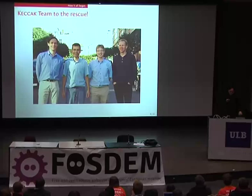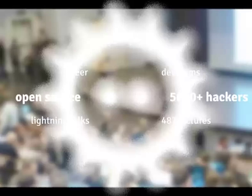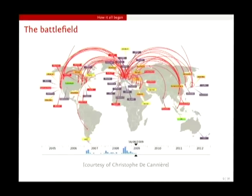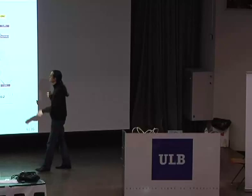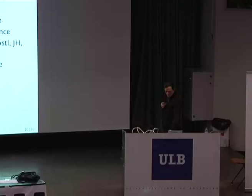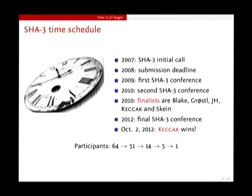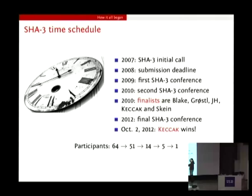Of course, we were not the only ones to answer this call. There were many — actually 64 submissions. There were many well-known names, like Ron Rivest, who is the designer of MD5, people from Bouncy Castle who designed their hash function, and IBM also participated. So there were many of them. The competition started in 2007, with the first conference in 2009. After three conferences, NIST selected 14 second-round candidates, then finally five third-round candidates, and then recently in October 2012 they selected Keccak.